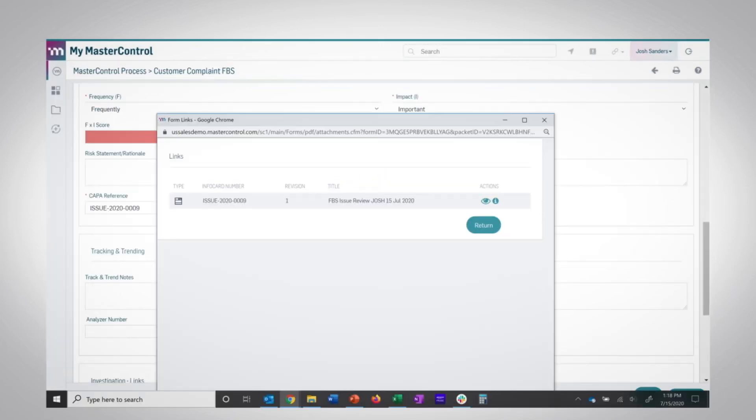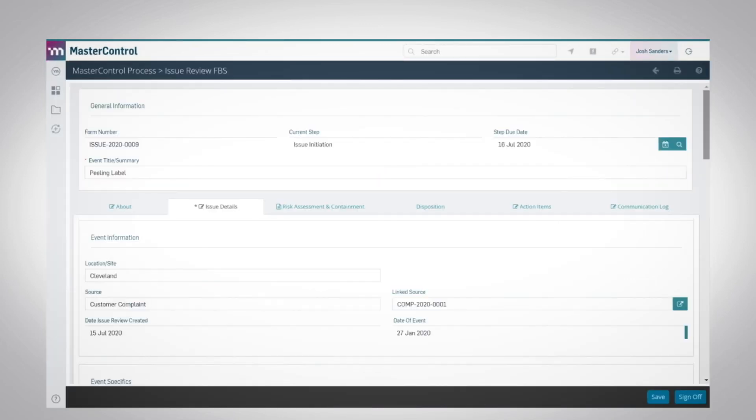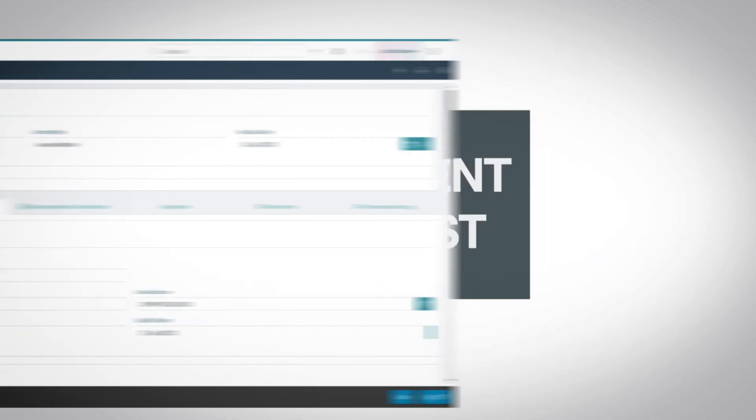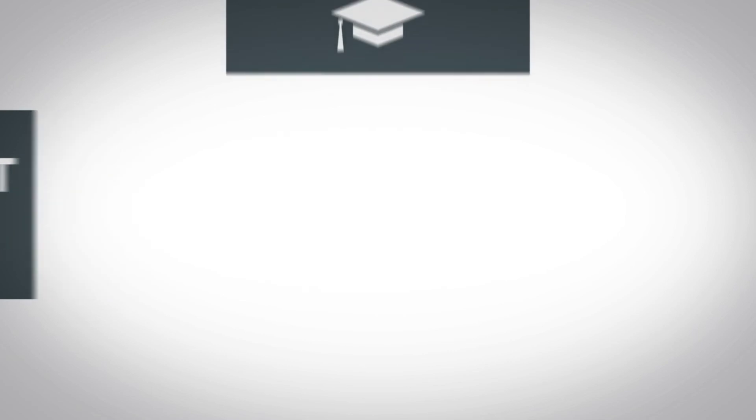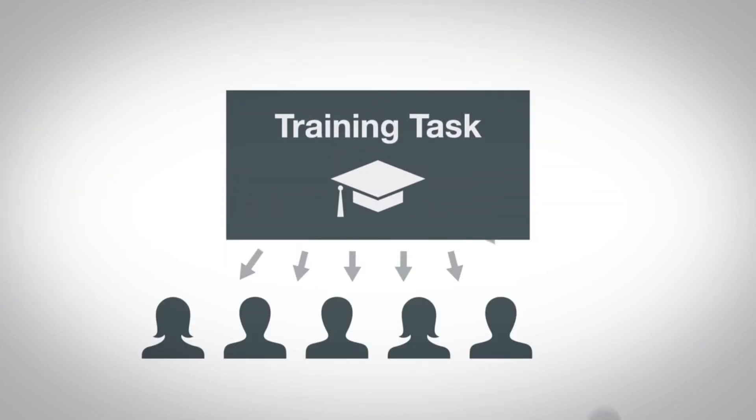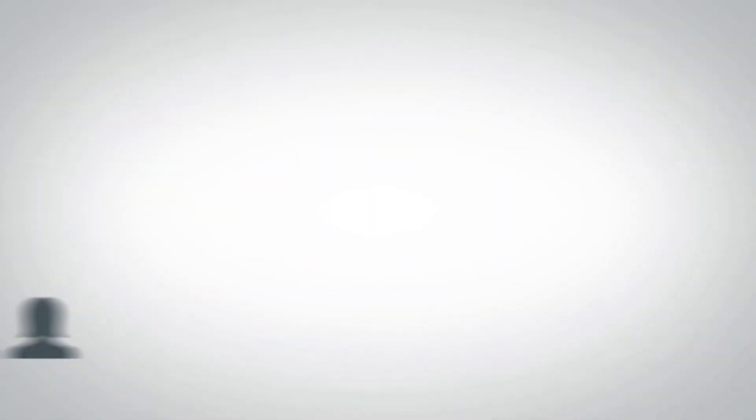A validated customer complaint can be used to launch the necessary non-conformance. Based on those findings, you can launch a CAPA to resolve the issue. CAPAs can generate an updated document request, and then you can push out those changes to your workforce using a training task — all of which vastly increases productivity while ensuring compliance and keeping you audit-ready.